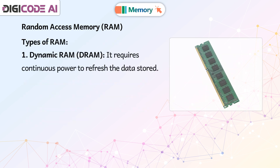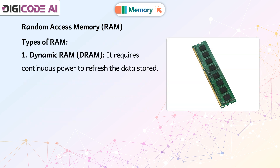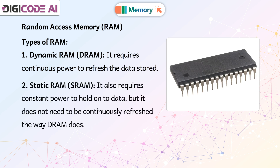Types of RAM. First, Dynamic RAM (D-RAM): it requires continuous power to refresh the data stored. Second, Static RAM (S-RAM): it also requires constant power to hold on to data, but it does not need to be continuously refreshed the way DRAM does.